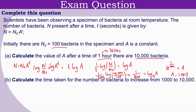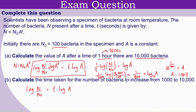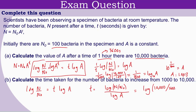For part b, we need to rearrange the equation for time. From log(n/n₀) = t·log(a), dividing both sides by log(a) gives t = log(n/n₀) / log(a). Plugging in: log(10,000/1000) divided by log(1.0013) gives t = 1800 seconds.